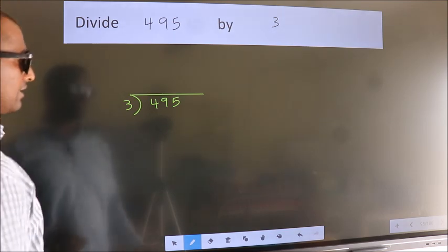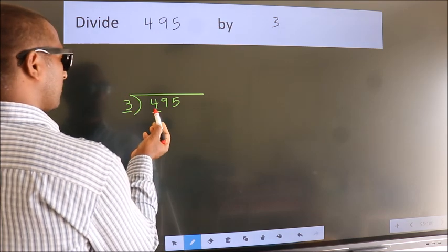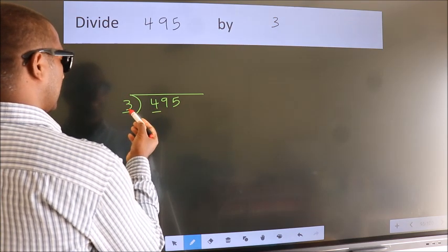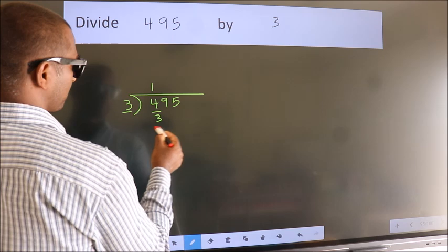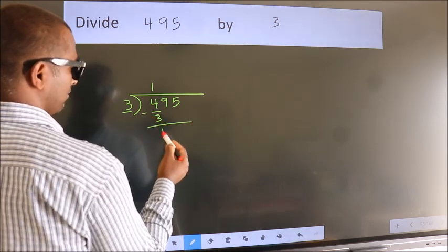Next. Here we have 4, here 3. A number close to 4 in 3 table is 3 once 3. Now, we should subtract. We get 1.